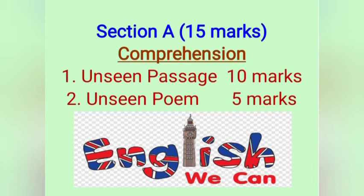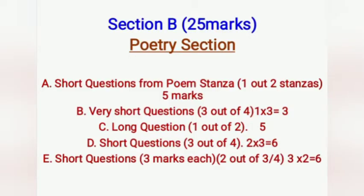In Section A you have Comprehension, and from Section A you have 15 marks in total. There is an unseen passage for ten marks, with questions from the unseen passage, and number two an unseen poem worth five marks, from which you will also get two to three questions.